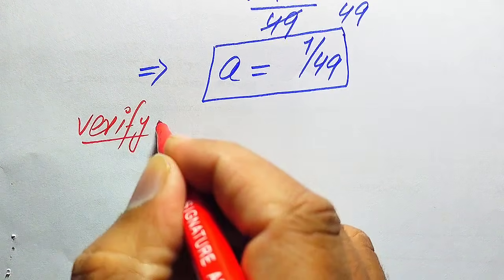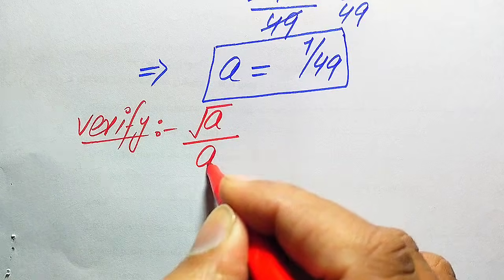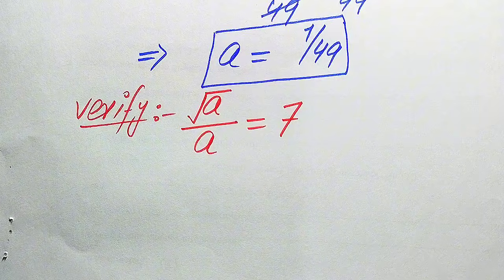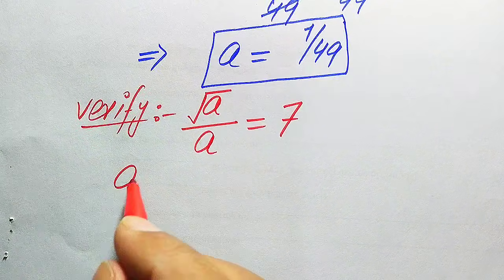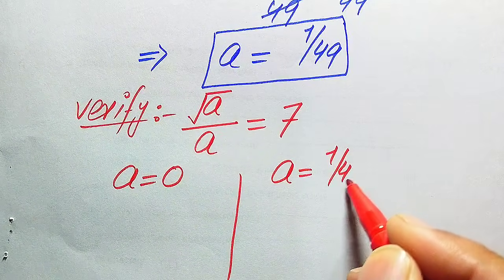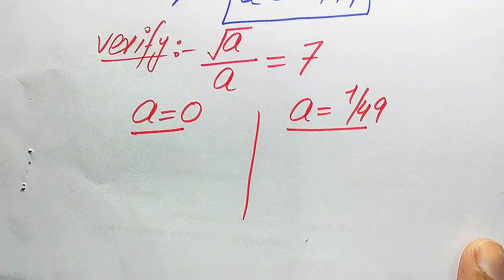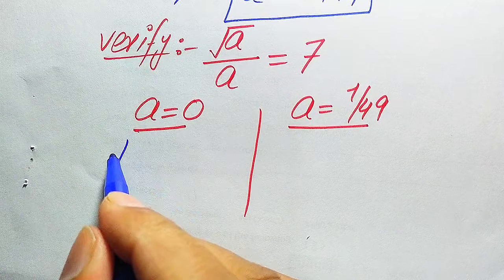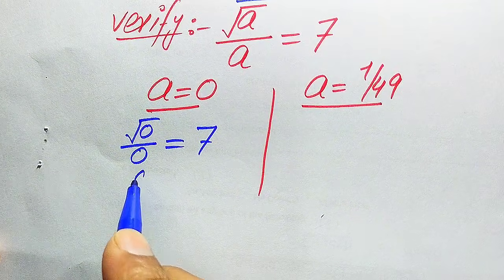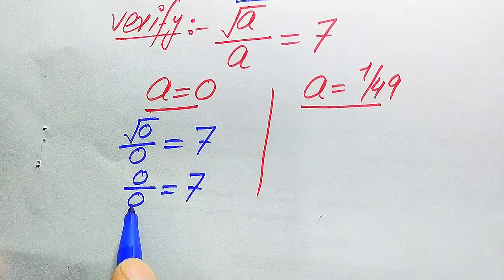For verification we copy down the given question: square root of a divided by a equals 7. On one side we verify a equals 0, and on the other side we verify a equals 1 over 49. First we verify a equals 0 by substituting into the left-hand side: it becomes square root of 0 divided by 0, which gives 0 over 0 equals 7.